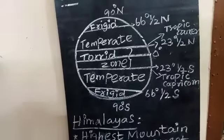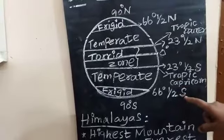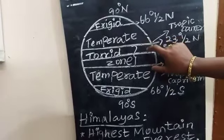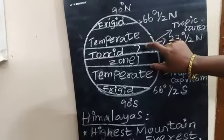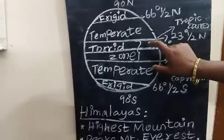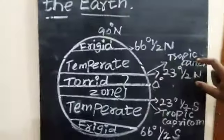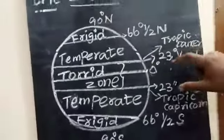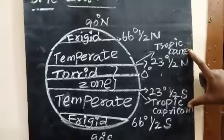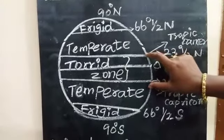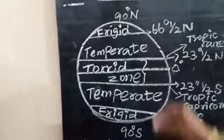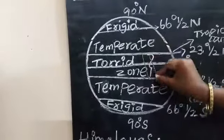The center zone is called the torrid zone. The torrid zone is the zone between the Tropic of Cancer and the Tropic of Capricorn. In this zone, people and the land receive more temperature because the sun's rays fall vertically. So the torrid zone receives the most heat.